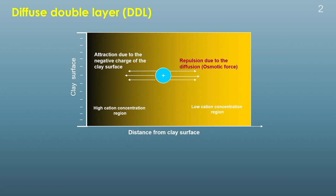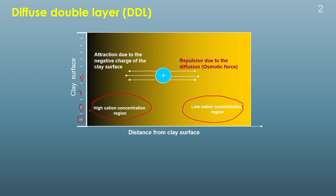Just to remind you about the diffuse double layer thickness: here we have a clay surface which is negatively charged. There are exchangeable cations present over it. When we add some salt solution, the equilibrium between the cations and the clay surface gets disturbed. Initially, when the soil is dry, these cations are strongly attracted towards the clay surface. But after adding water or liquid, this equilibrium gets disturbed because a concentration gradient develops between the clay surface and a distance away from it.